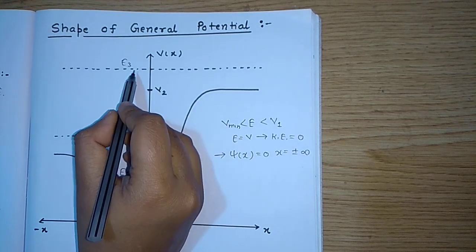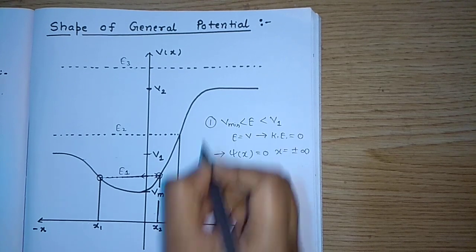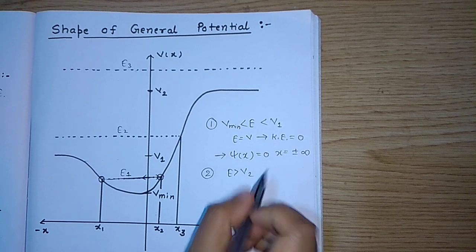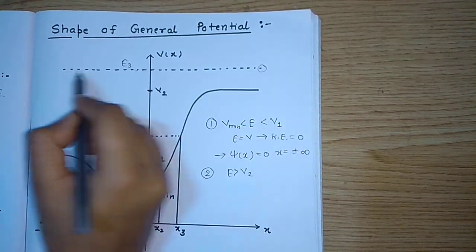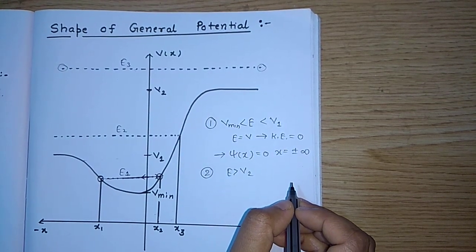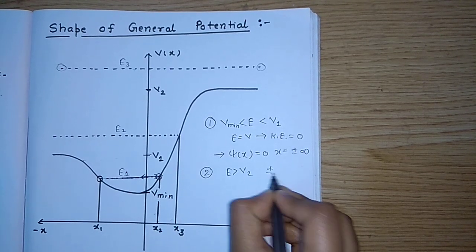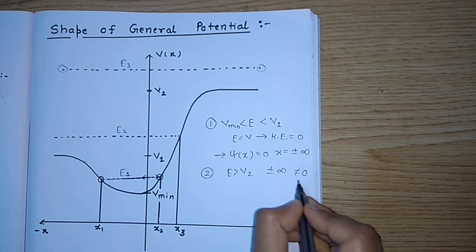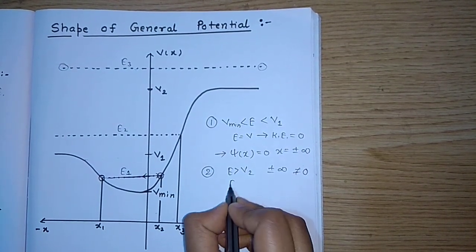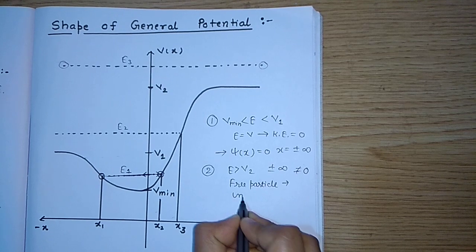The second condition is when the energy is E3, which is clearly greater than V2. In this case, I have no turning points in either direction, and the energy is always greater than the potential. So the probability of finding the particle at either plus infinity or minus infinity is not zero — the motion is not confined to a finite region. This is the free particle condition, or the unbound state.